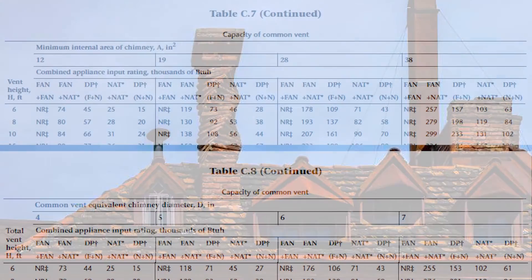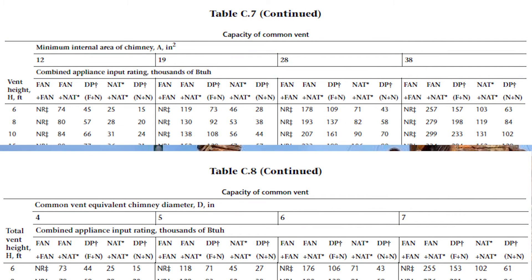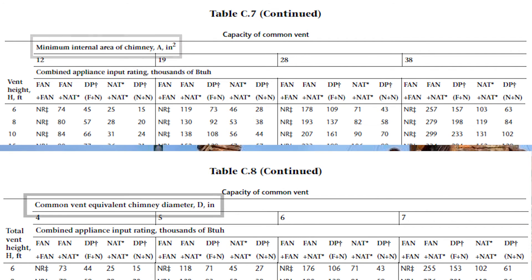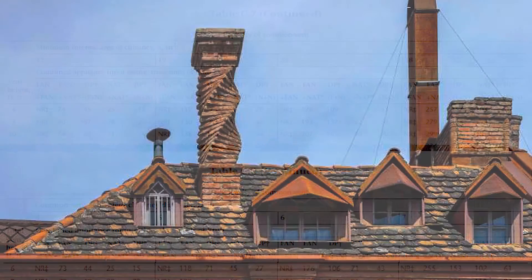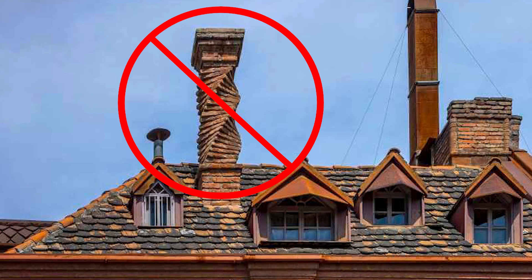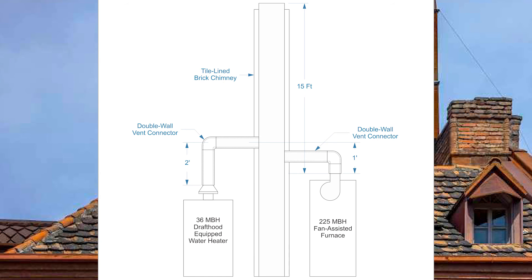Looking through Tables C7 and C8 for the capacity of common vent, you'll notice a nuance: Table C7 only identifies the minimum internal area of a chimney in square inches, while C8 gives a round equivalent — not sure why. In practice, you will almost never need to size a chimney yourself. When the mathematical check doesn't work out, you'll need to do something else, which will be covered in the next and final video.